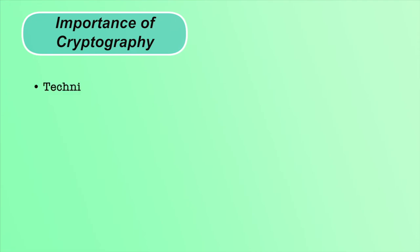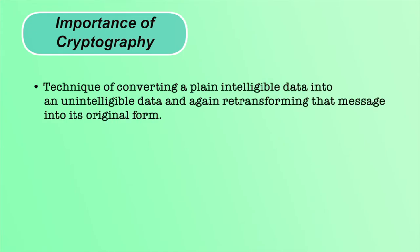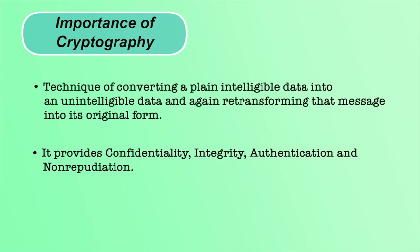As we have already discussed in the definition of cryptography, it is the technique of converting plain intelligible data into an unintelligible form and again re-transforming that message into its original form. Cryptography plays an important role to provide confidentiality, integrity and availability of information. The message is converted into non-readable form so the attacker will not be able to read it — in this way data is confidential between sender and receiver. By using digital signature, we can maintain integrity, authenticity and non-repudiation of the message.